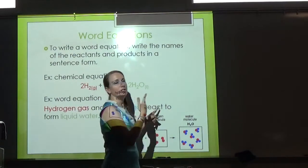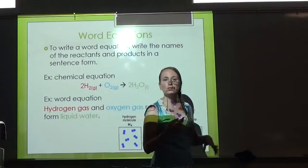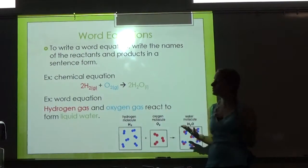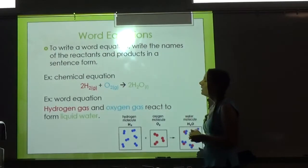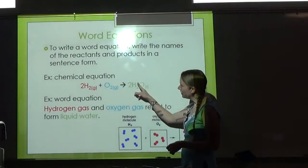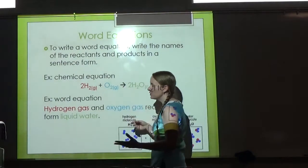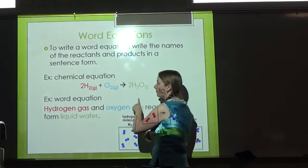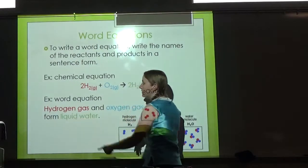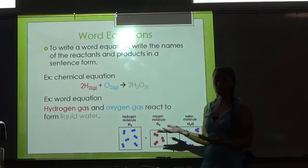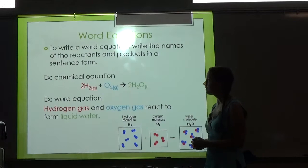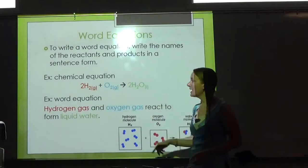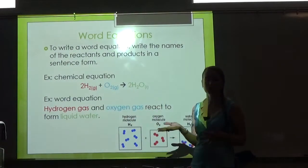When you get to the yield sign, you can say 'yields,' 'produces,' 'react to form'—whatever you want to say. Then we have H2O, which of course we can just call water, and it's in the liquid form. You can't have water in the gas form be called steam. So it's very important that you write the states of matter in your word equation.